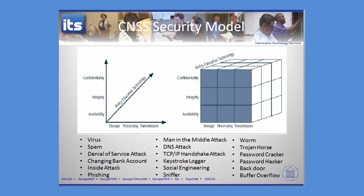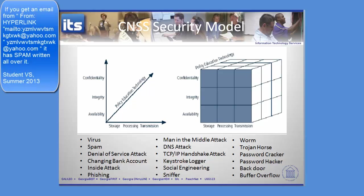First thing to do is remember the model. Confidentiality: can I protect who sees the information? Integrity: can I protect so that someone can't change the information? Availability: can I protect so that others can get to the information? And when looking at that, do I look at it while the information is being stored, processed, or transmitted? Then you've got that arrow in the middle that addresses policy, education, and technology as your three tools.